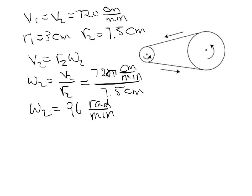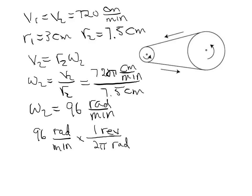That tells us the angular velocity in radians per minute. If we want to convert that back to revolutions per minute, we do the same conversion in reverse. We take 96 pi radians per minute and multiply by the conversion fraction: 1 revolution over 2 pi radians. The radians cancel, and the pi's cancel, and when we do the division we end up with 48 revolutions per minute. That is the angular velocity of the larger pulley.